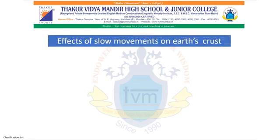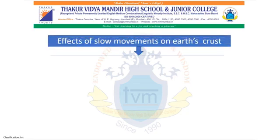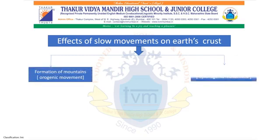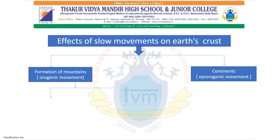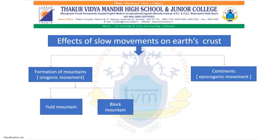Let us see the effects of slow movements on the earth's crust. These slow movements lead to the formation of mountains and continents. We also call these orogenic movements, which lead to the formation of mountains, and epi-aurogenic movements or continent-building movements, which lead to the formation of continents. The vast portion of land that appears above sea level is called a continent, and there are seven continents on the earth.